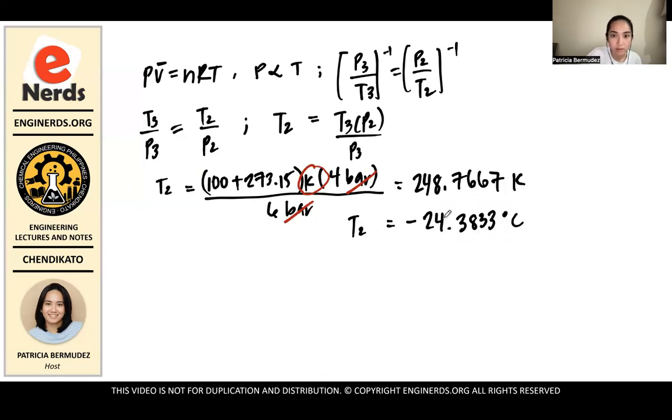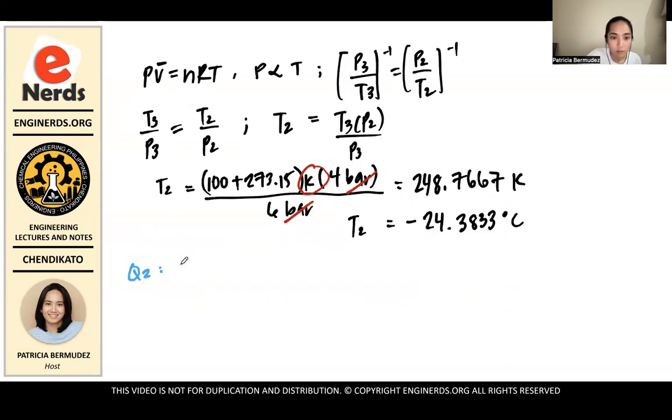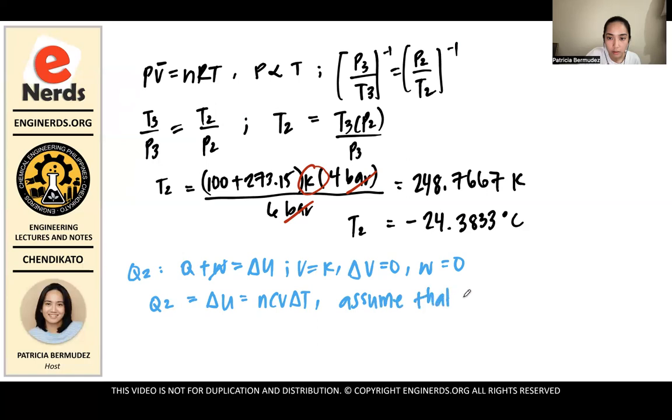We have all the values. So the next step is to find Q2. And we know that in an isochoric system because the volume is constant, we know that q plus work equals the change in internal energy. But since the change in volume is zero, therefore the work is zero. So Q2 equals delta U, which is n Cv delta T. And let's assume that air is diatomic. So Cv for diatomic is 5 over 2 R. And Cp is 7 over 2 R.